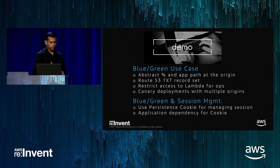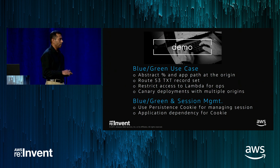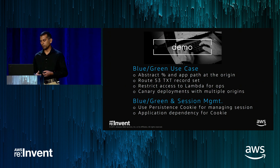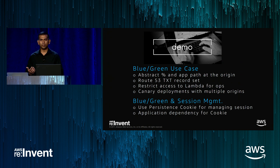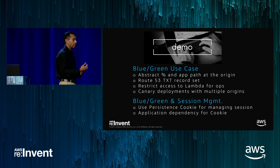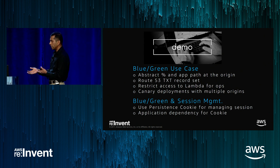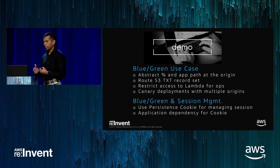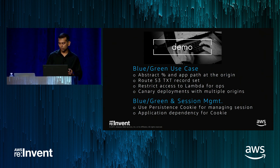A second use case within blue-green is persistence. When dealing with applications that have cookies or session state, you want to make sure a user stays on the blue stack or the green stack — not being thrown between multiple stacks mid-session. The persistence feature uses a session cookie to maintain which origin a user is assigned to throughout their session.